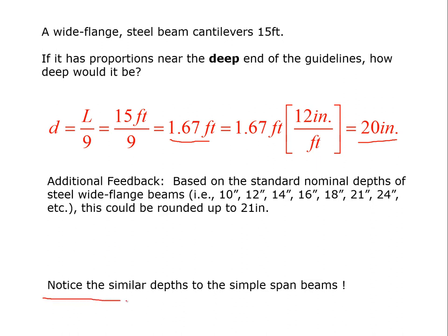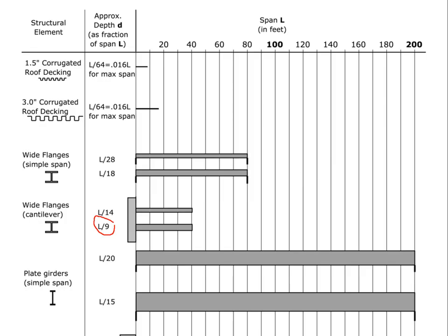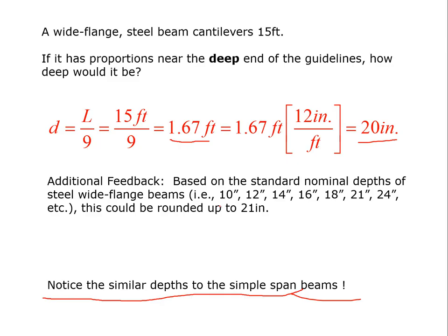But what I want you to notice here is the similarity to the depths of the simple span beams. And I'll just go back and make this point that any spanning member used as a cantilever can span about twice as far used as a simple span. So we took two cases here. One was a 30-foot simple span and then a 15-foot cantilever. And so based on that, we should expect actually to get the same depth. So when we ran these numbers, for this case, we got the same depth as we got for that one. And for this case, we got the same overall depth as we got for that one. And this is exactly what we would expect to happen.